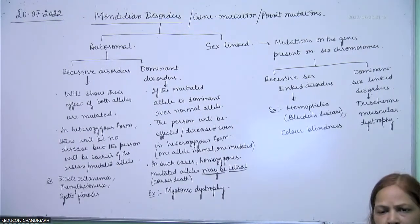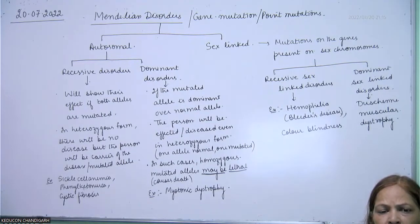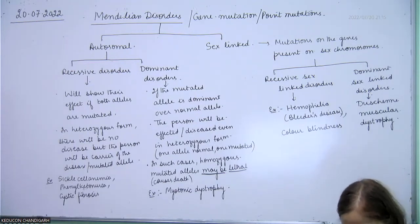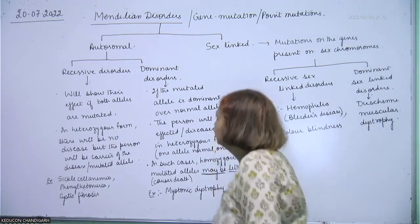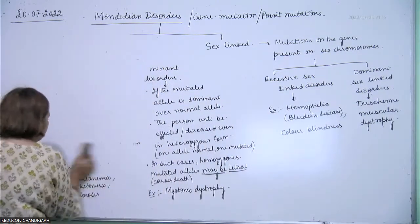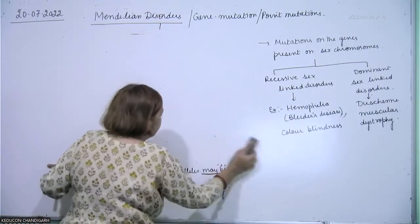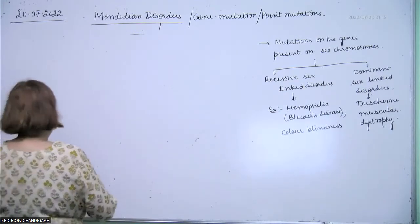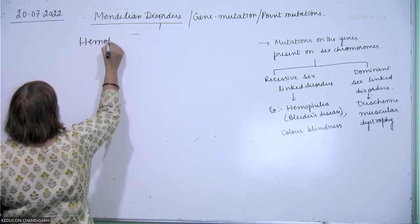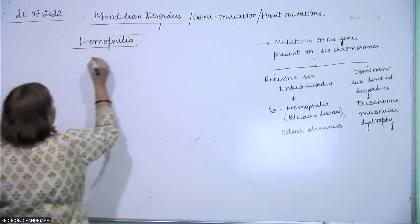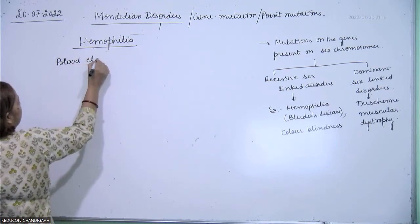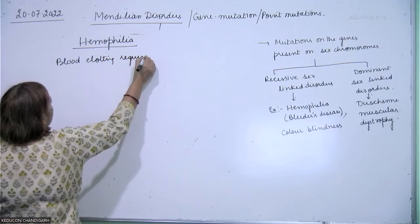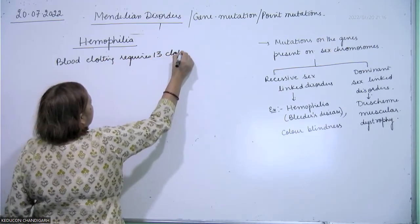Next are sex-linked disorders. The first is hemophilia. You must understand that blood clotting requires 13 clotting factors.